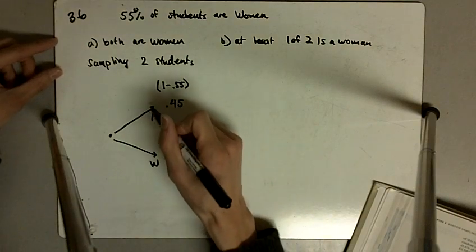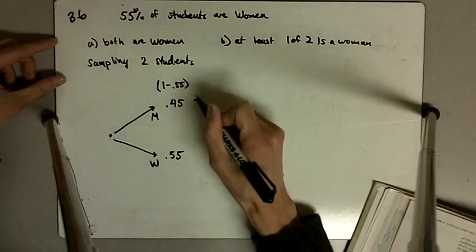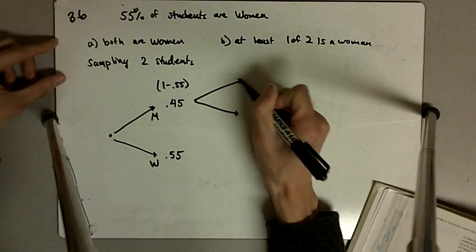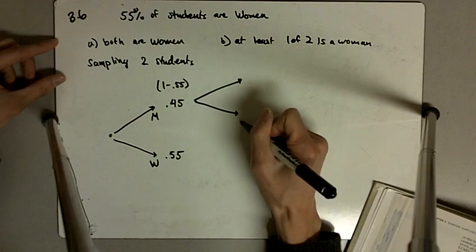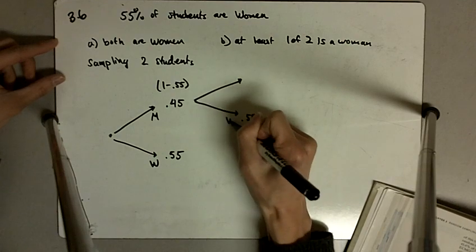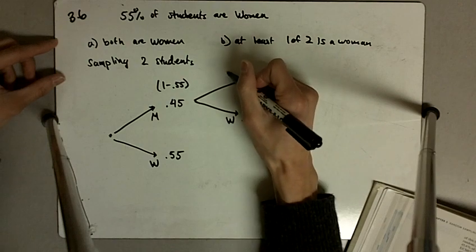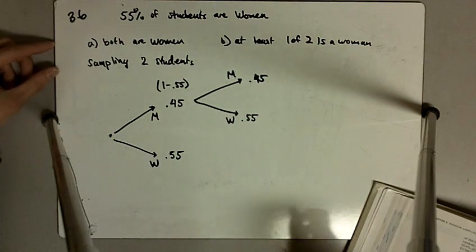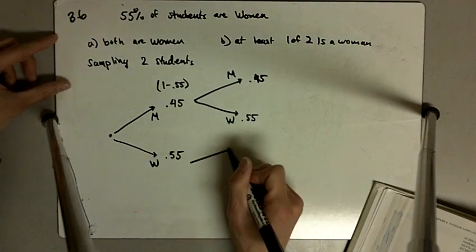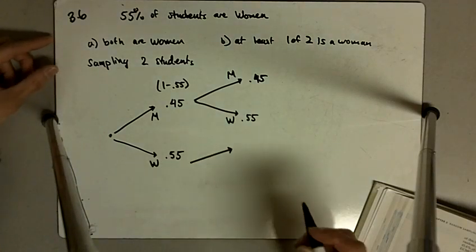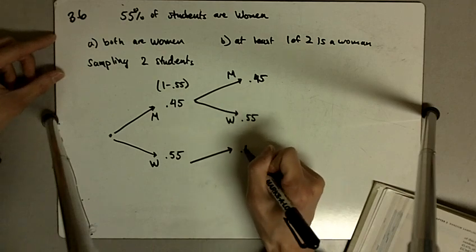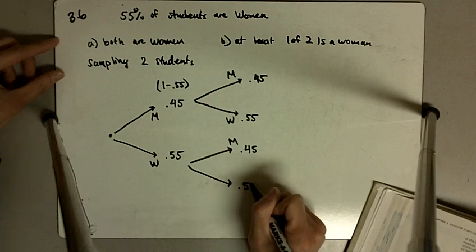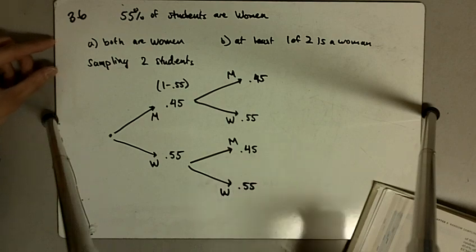If we draw a man first, we can then draw a second student, and again, this has the same probability, 0.55 of selecting a woman, and 0.45 of selecting a man. And over here, if the first student we draw is a woman, again, we still have the same probability, 0.45 of selecting a man, and 0.55 of selecting a woman.